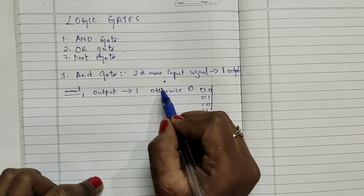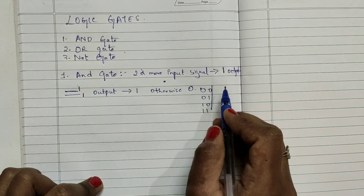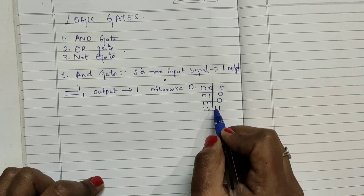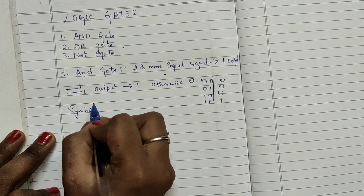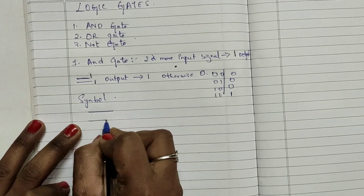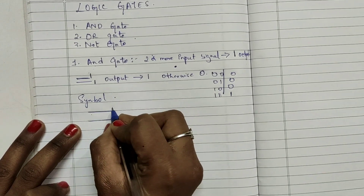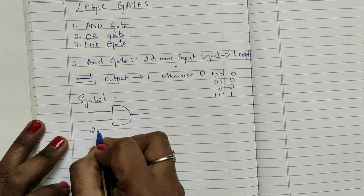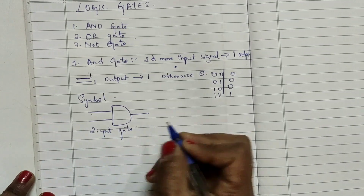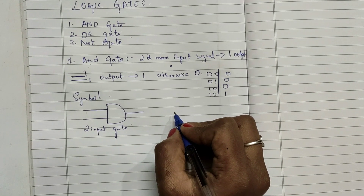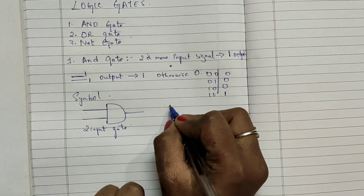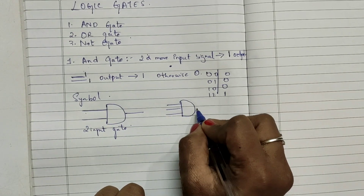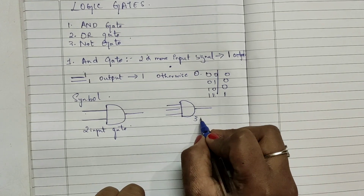AND gate is essentially logical multiplication — both conditions should be satisfied. When both inputs are 1, the output is 1; otherwise it is 0. The symbol for AND gate has two input signals and one output, shaped like a D. For a three-input AND gate, it has three input signals with the same AND gate symbol and one output.